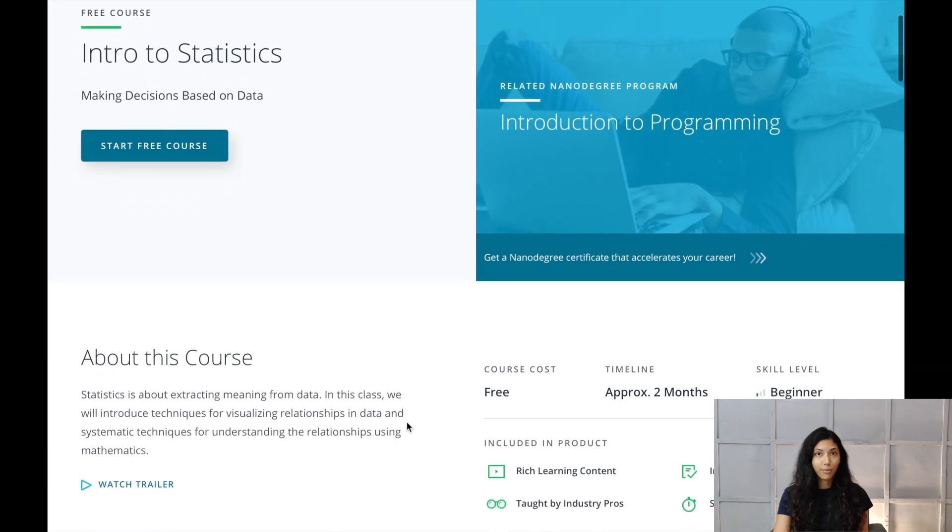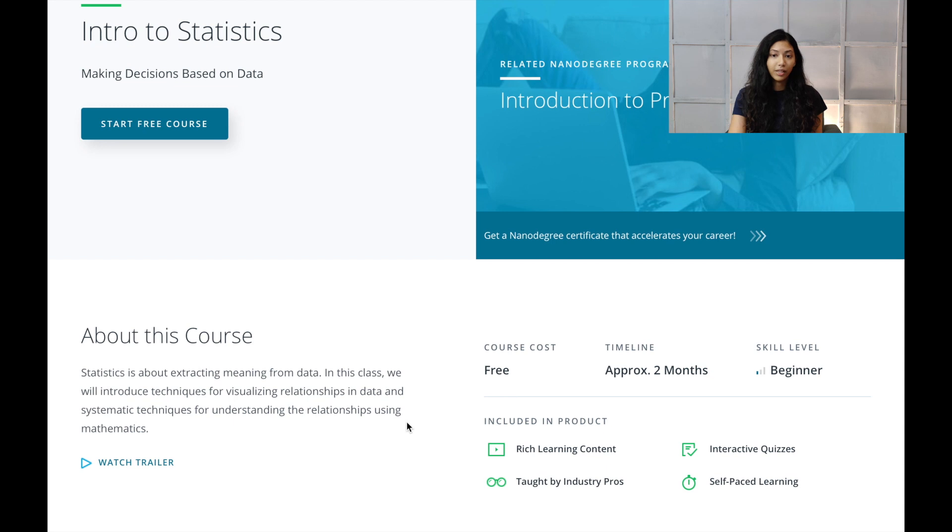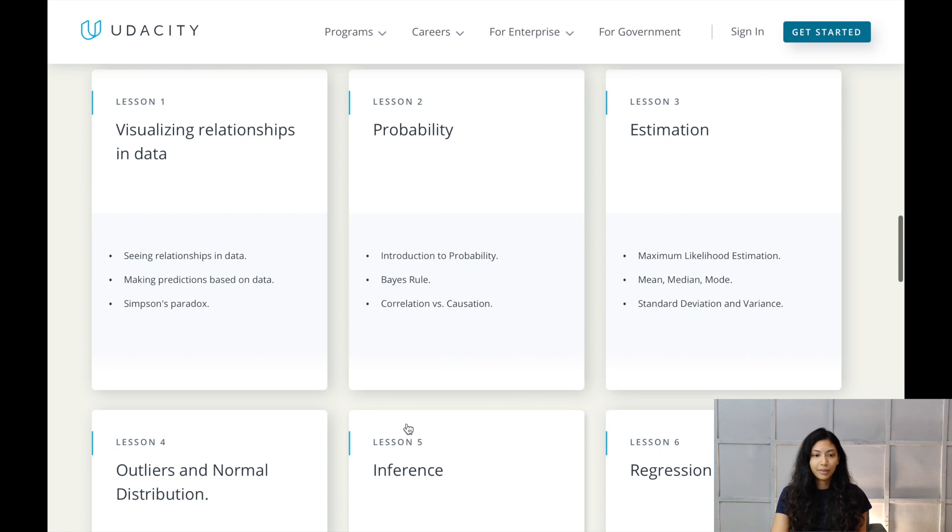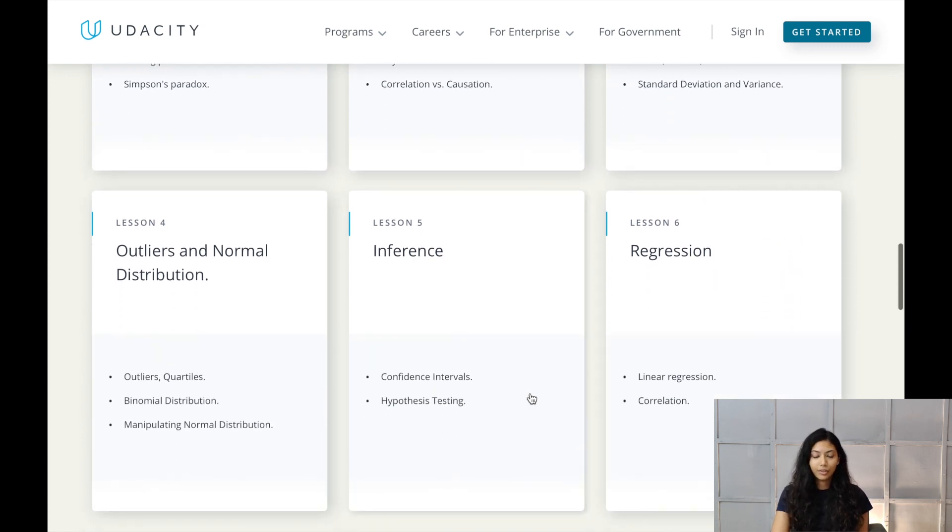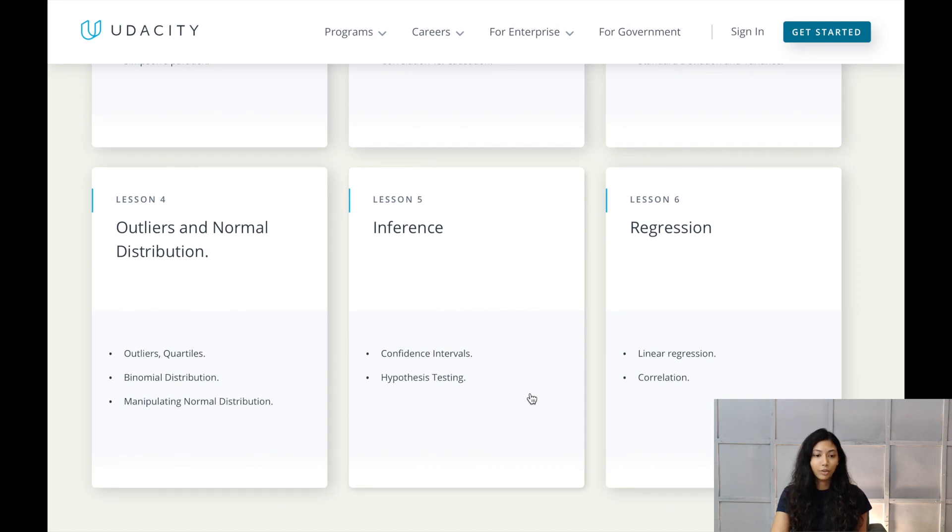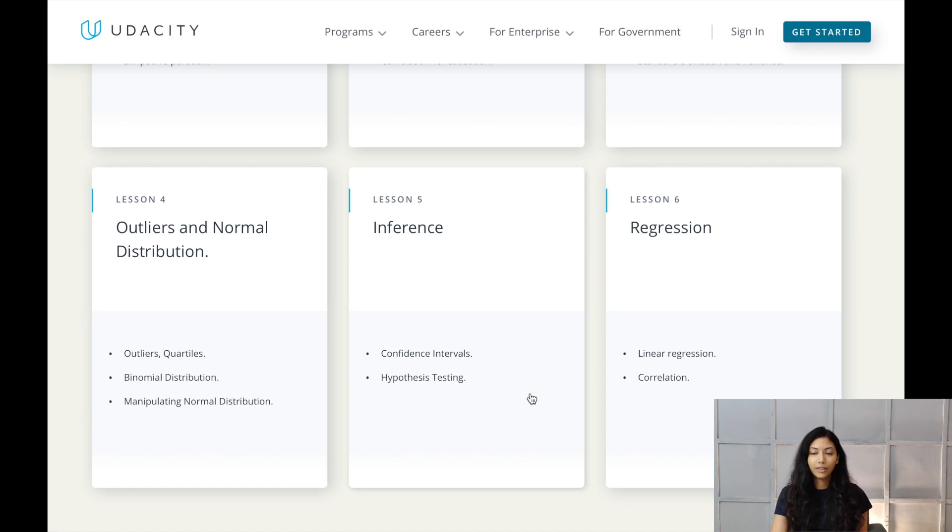The second thing to learn is probability and statistics, and for that, Udacity has a really good introductory course to statistics which is great to start off with. It takes about two months to complete and it's for absolute beginners. In this course, you will learn how to visualize relationships in data, probability, introduction to probability, Bayes rules, correlation versus causation, estimation, things like mean, median, mode, how to calculate those things, standard deviation, variance. You also learn different types of distributions such as binomial distribution and normal distribution. You will also get to learn linear regression in this course. That is also a great course to start off with when you're learning statistics.